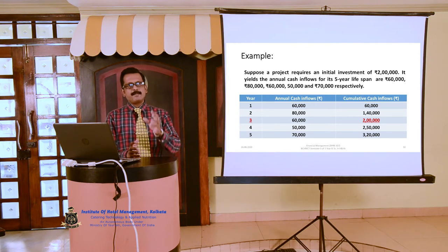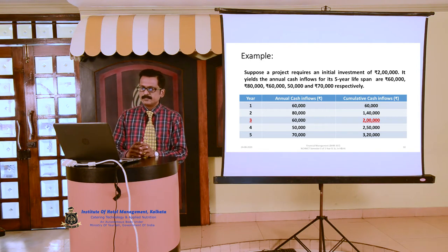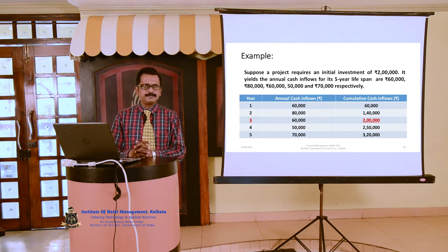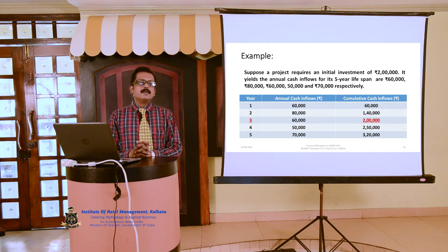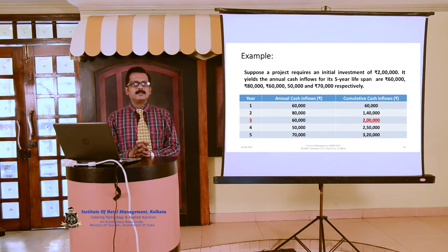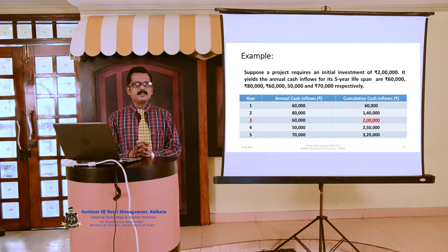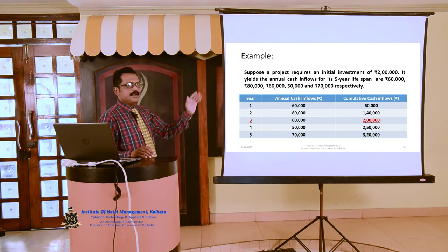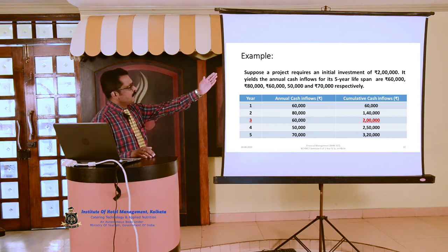Now, an example for better understanding of what capital budgeting is. Suppose a project requires an initial investment of rupees 2 lakh. It yields annual cash inflows for its five-year lifespan: 60,000 rupees in the first year, 80,000 rupees in the second year, 60,000 rupees in the third year, 50,000 rupees in the fourth year, and 70,000 rupees in the fifth year. There are three columns: year, annual cash inflows, and cumulative cash inflows.